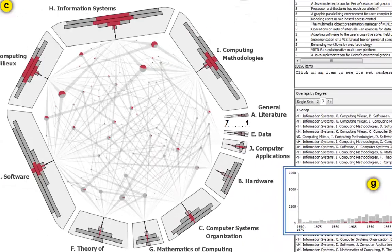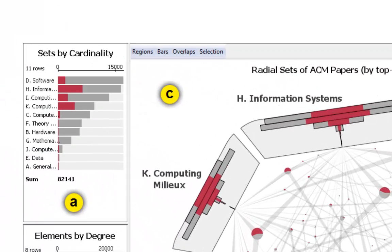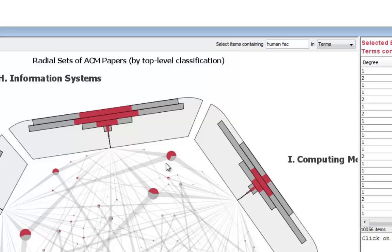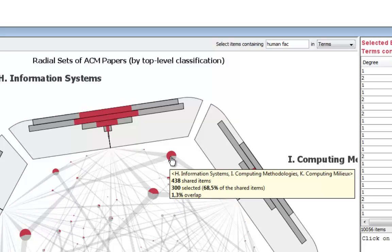Also, radial sets highlight the portions these elements represent in the sets and in the overlaps. This reveals the overlaps in which the selected elements are over-represented.